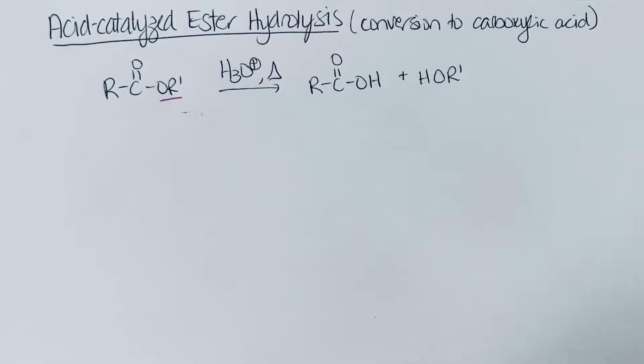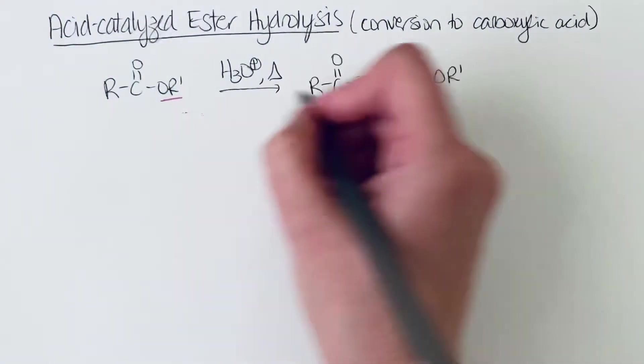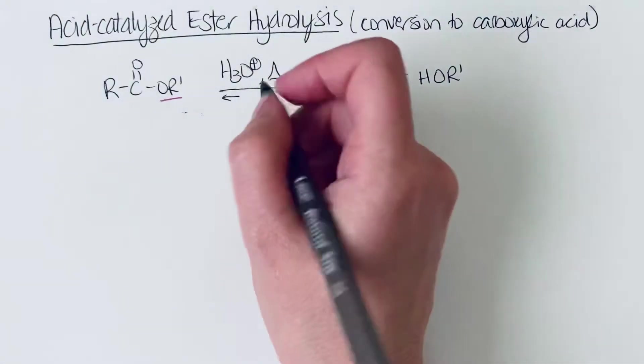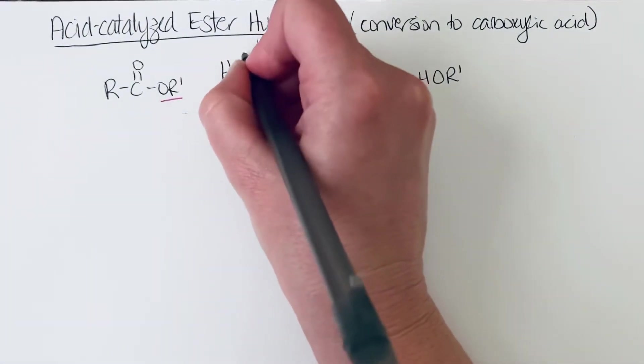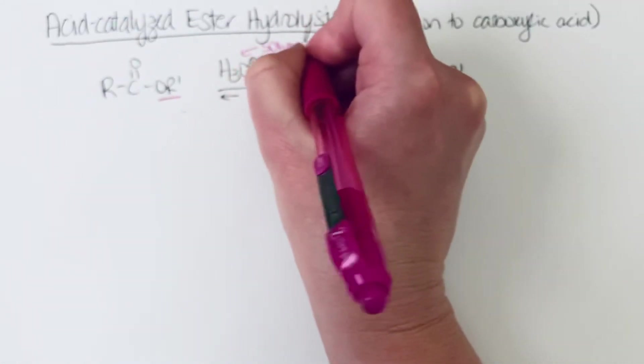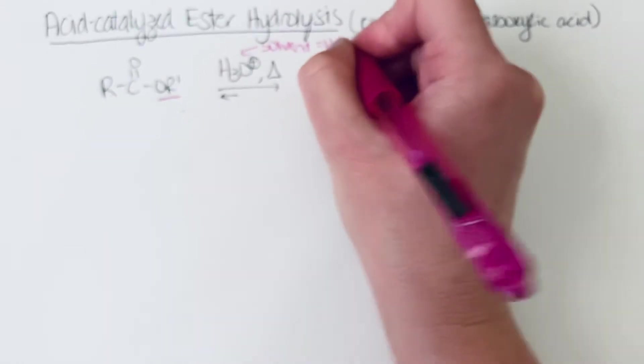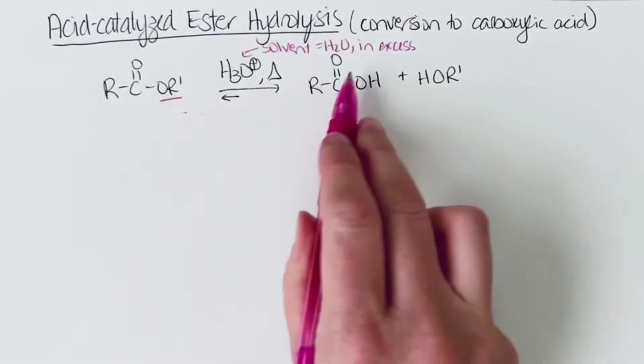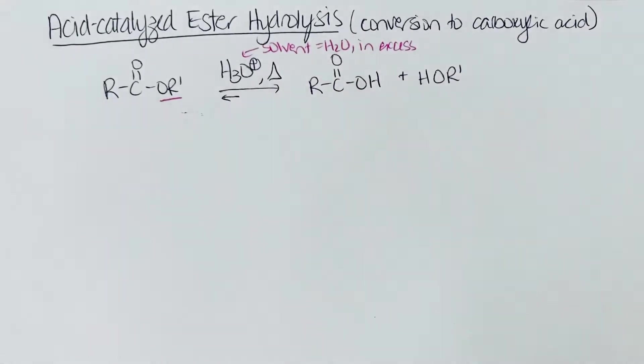So the way that we drive these equilibrium towards the product is by using an excess of whatever your nucleophile is. So if you think of using H3O+, that means your solvent is water, and it's present in excess. So having excess of a reagent is one way to push an equilibrium forward.